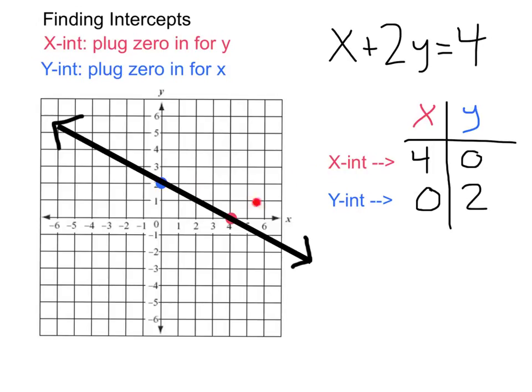And there we've got our line, our x-intercept at the point four zero, our y-intercept at the point zero two, and then we drew our line right across those dots.